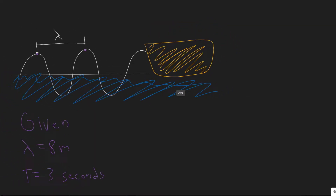What we're trying to find here is the velocity. In order to find the velocity, you need to know this formula: the velocity of a wave is equal to the frequency multiplied by lambda.